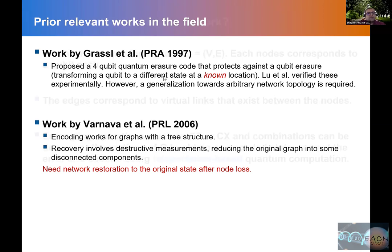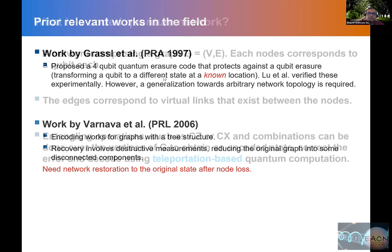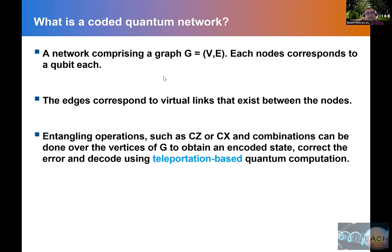Varnava and others considered encoding graphs with a tree-like structure, where recovery involves destructive measurements, which reduces the original graph into disconnected components. This may not be useful because we want network restoration after node loss back to the original state. These two problems motivated us to consider this problem. A coded quantum network is basically a graph in the graph theory setup — a set of vertices and edges, where each node corresponds to a qubit and edges correspond to virtual links between nodes.